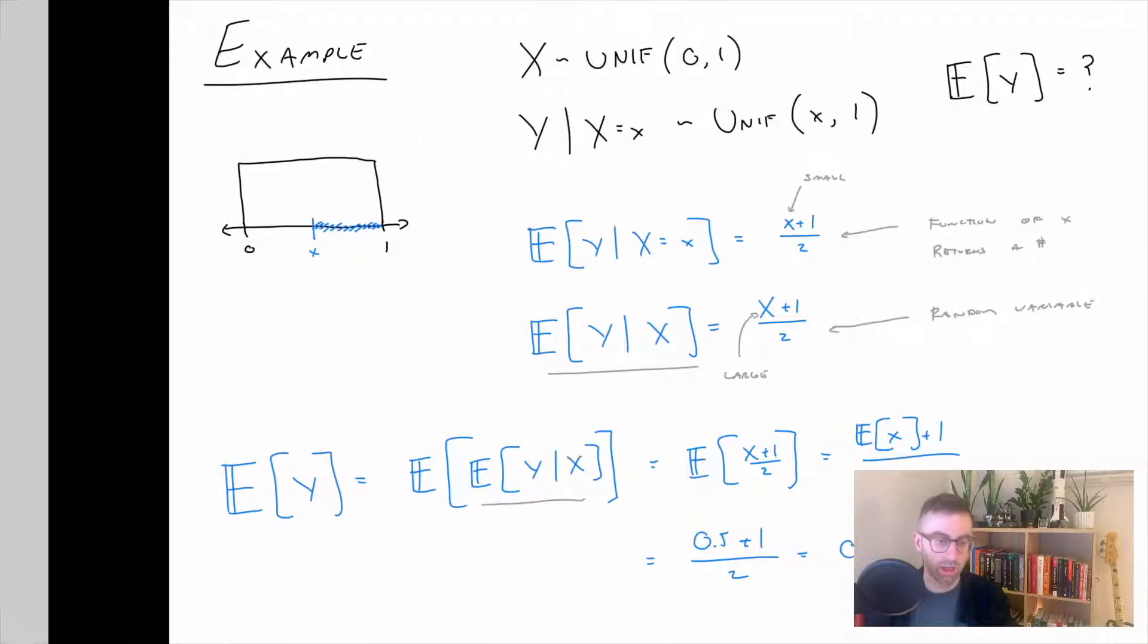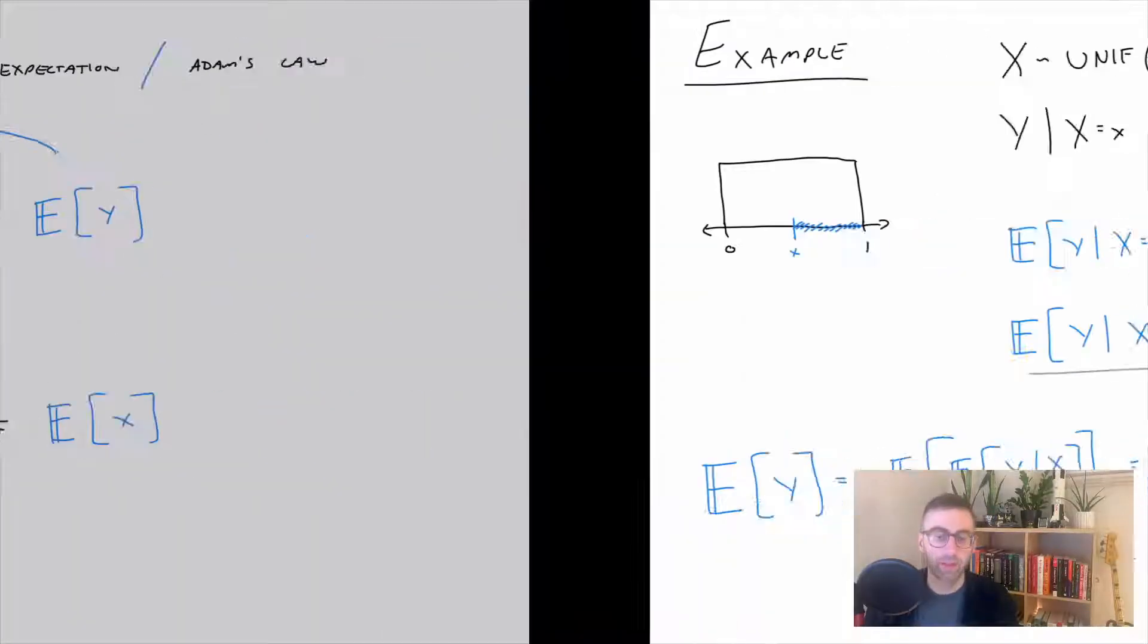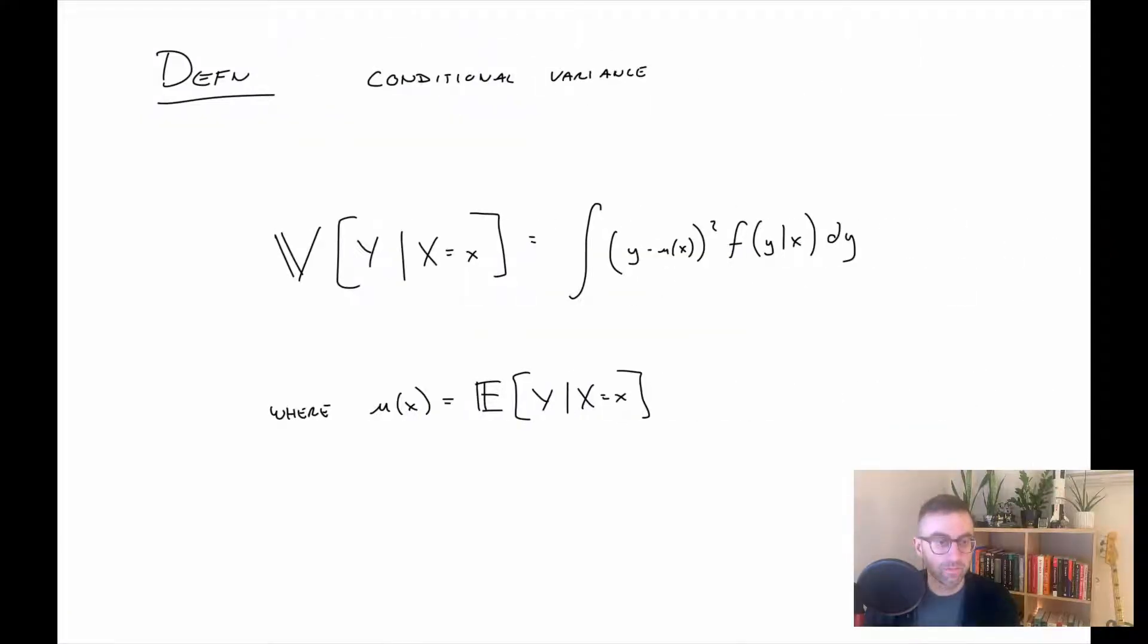So in the same way that we can define conditional expectation, we can also define conditional variance, and it looks something like this. Again, it looks really similar to the variance formula except now the mean is conditional and this is the distribution of Y given X. This is the conditional variance of Y given X. I think I flipped that for some reason but not a big deal.